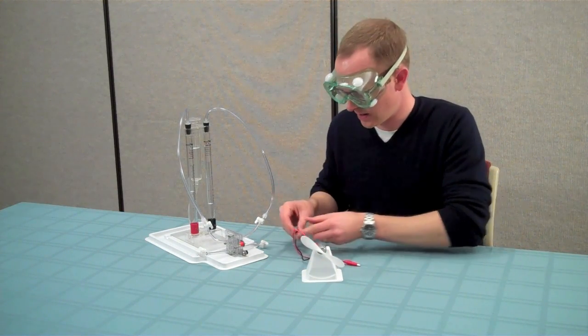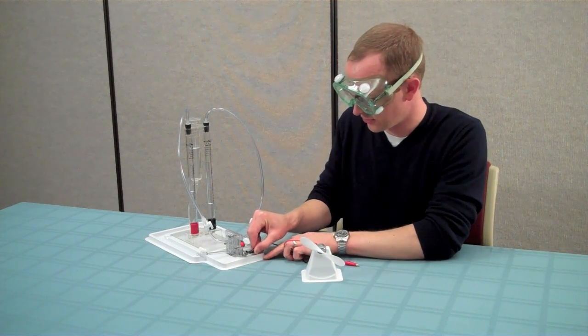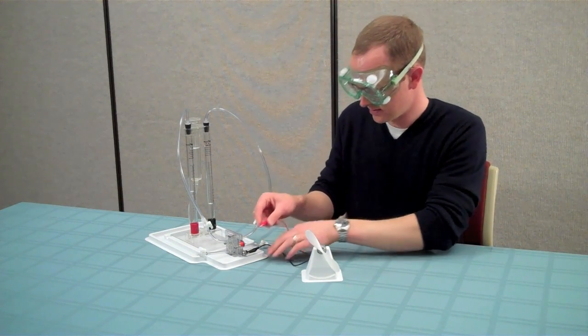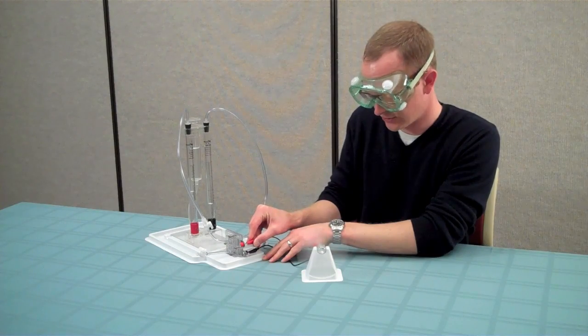Connect the black wire to the black electrode on the fuel cell. And then, connect the red wire to the red electrode. And the motor should start spinning now.